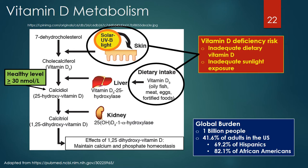Vitamin D comes from two sources: the metabolism of 7-dehydrocholesterol via exposure of the skin to ultraviolet B light from the sun, and dietary intake from fish, meat, eggs, and vitamin D-fortified foods. Vitamin D must undergo metabolism in the liver to 25-hydroxyvitamin D, and then be further metabolized to 1,25-dihydroxyvitamin D in the kidney. 1,25-dihydroxyvitamin D is the active compound that maintains calcium and phosphate functions in the body, including building and maintaining healthy bones, augmenting the immune system to resist bacteria and viruses, and is essential for adequate muscle and nerve functions.